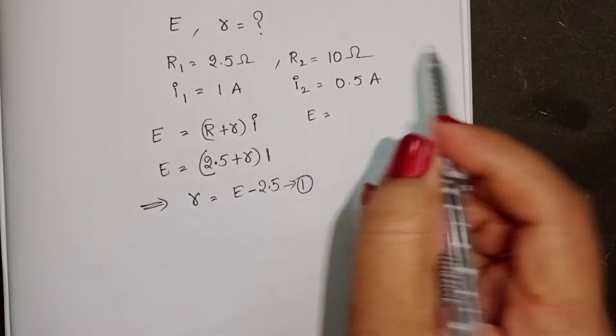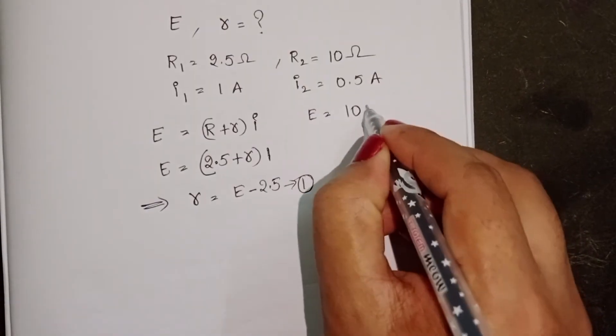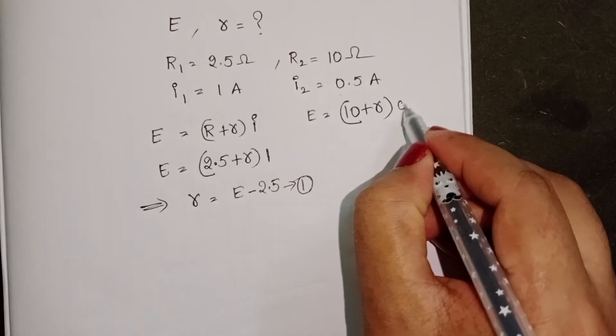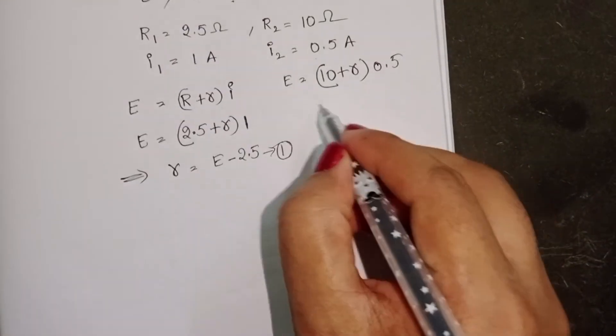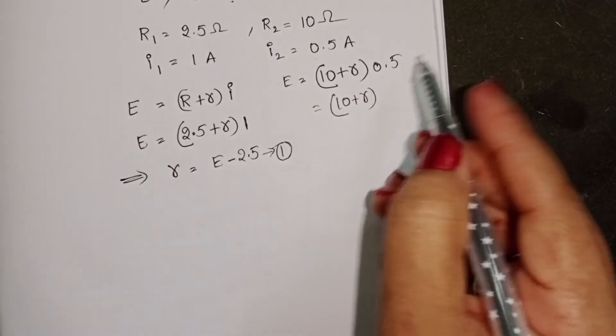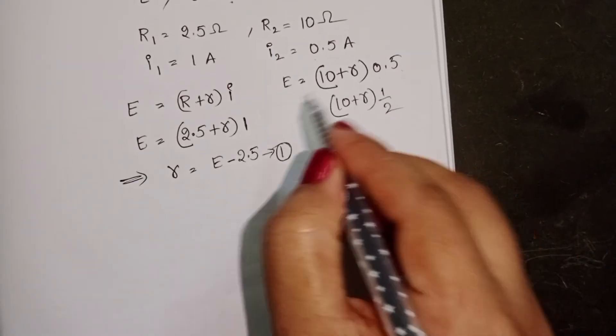Here E equals to resistance 10, internal resistance R, current is 0.5A. 10 plus R into 0.5 equals to 1 by 2.